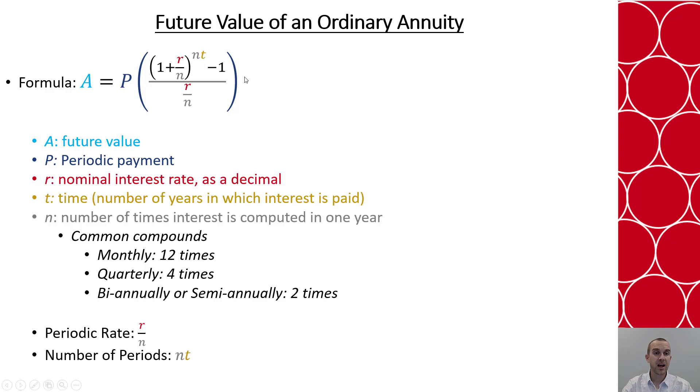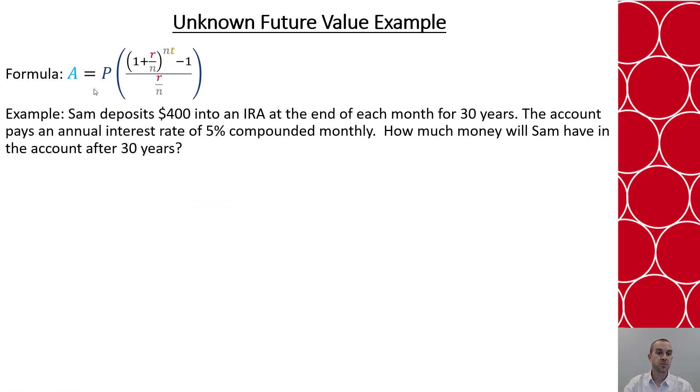So let's apply this formula to help us solve some problems around ordinary annuities. Say that Sam deposits $400 into an IRA at the end of each month for 30 years. The account pays an annual interest rate of 5% compounded monthly. How much money will Sam have in the account after 30 years?